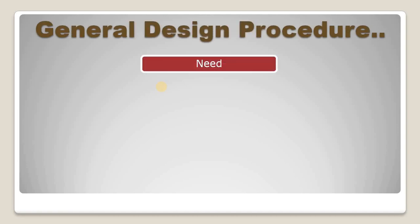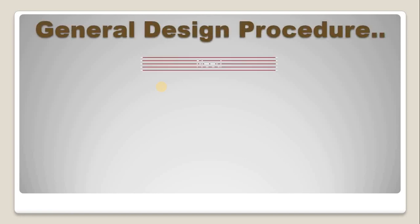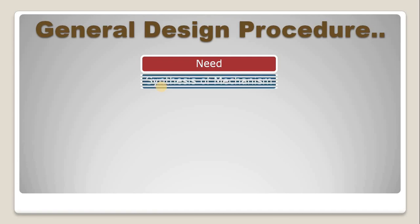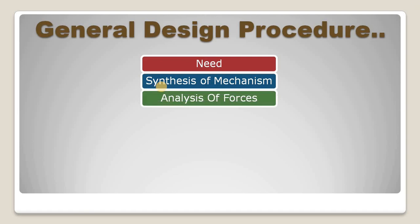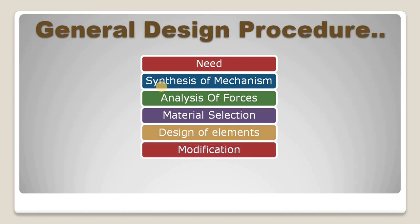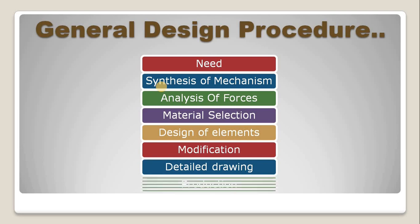First of all, we have to consider the general design procedure in machine design. The general design procedure is as follows: first is need; second is synthesis of mechanism; third is analysis of forces; fourth is material selection; fifth is design of elements; sixth is modification; seventh is detail drawing; and last is production.